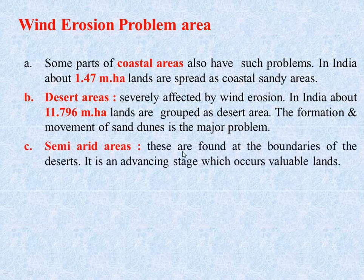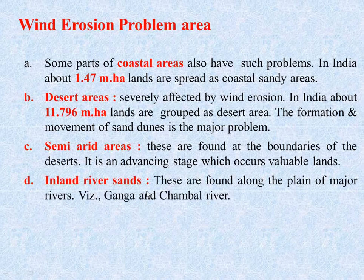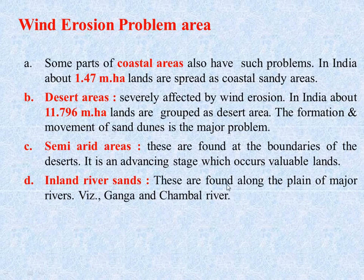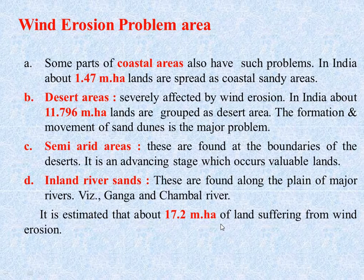Semi-arid areas are found at boundaries of deserts and are an advancing stage that affects valuable lands. Inland river sands are found along the plains of major rivers like Ganga and Chambal. It is estimated that about 70.2 million hectares of land suffer from wind erosion.